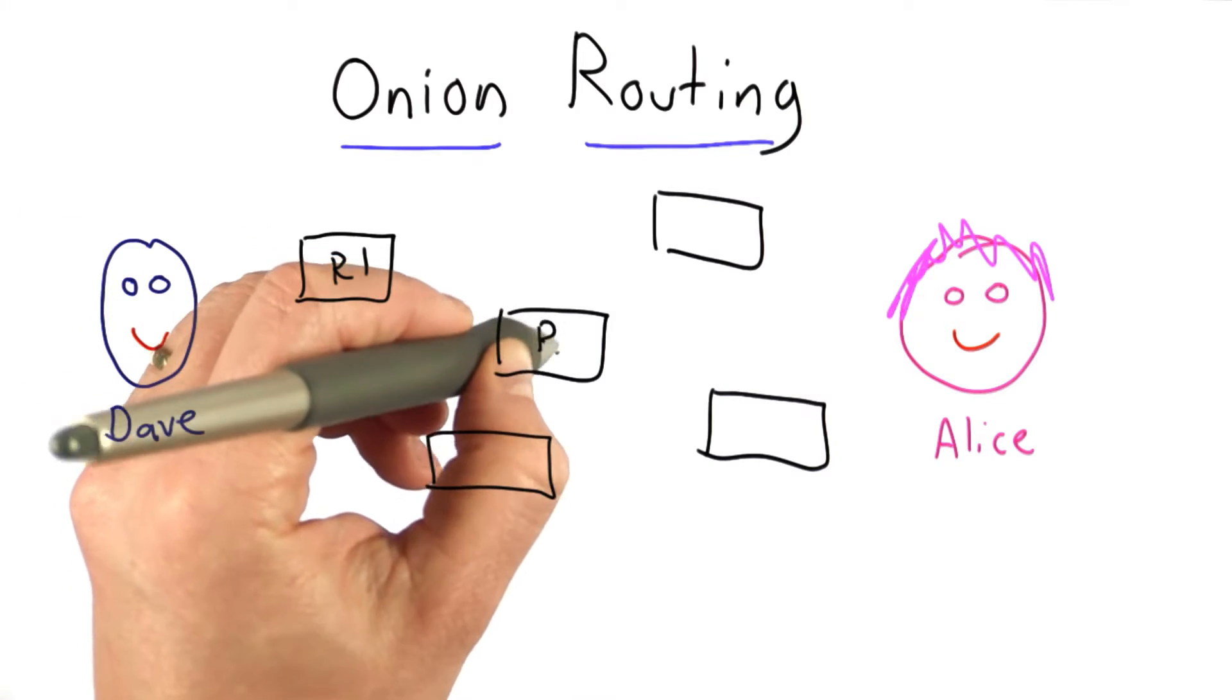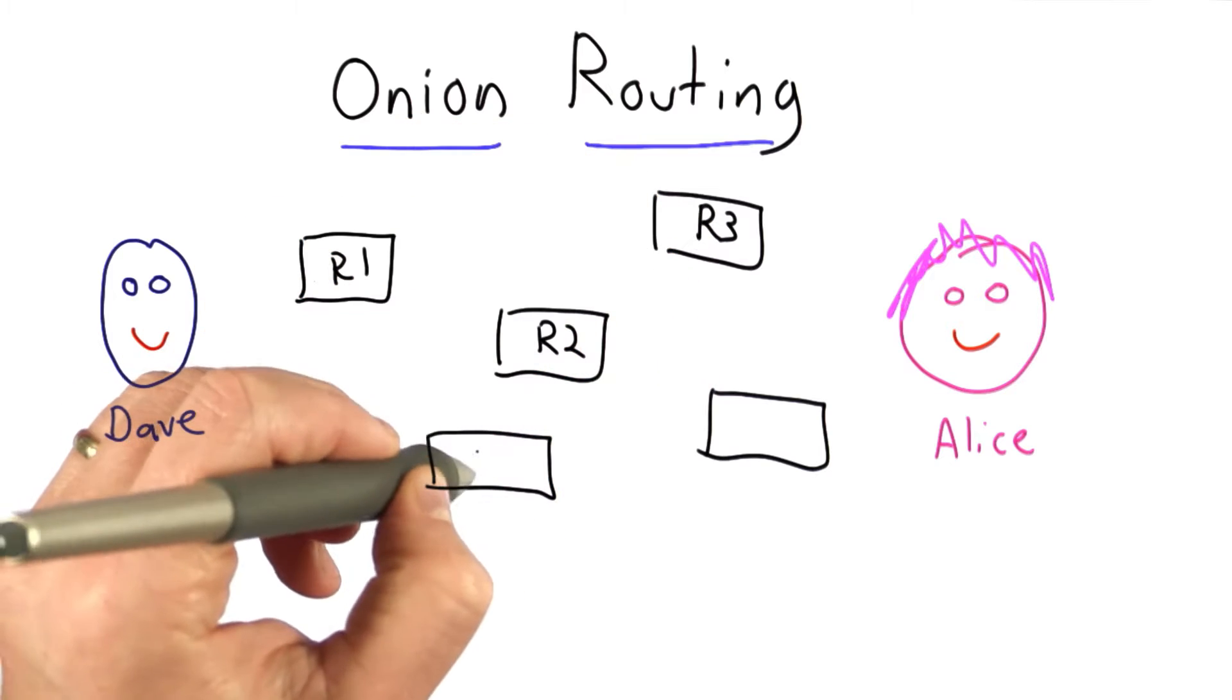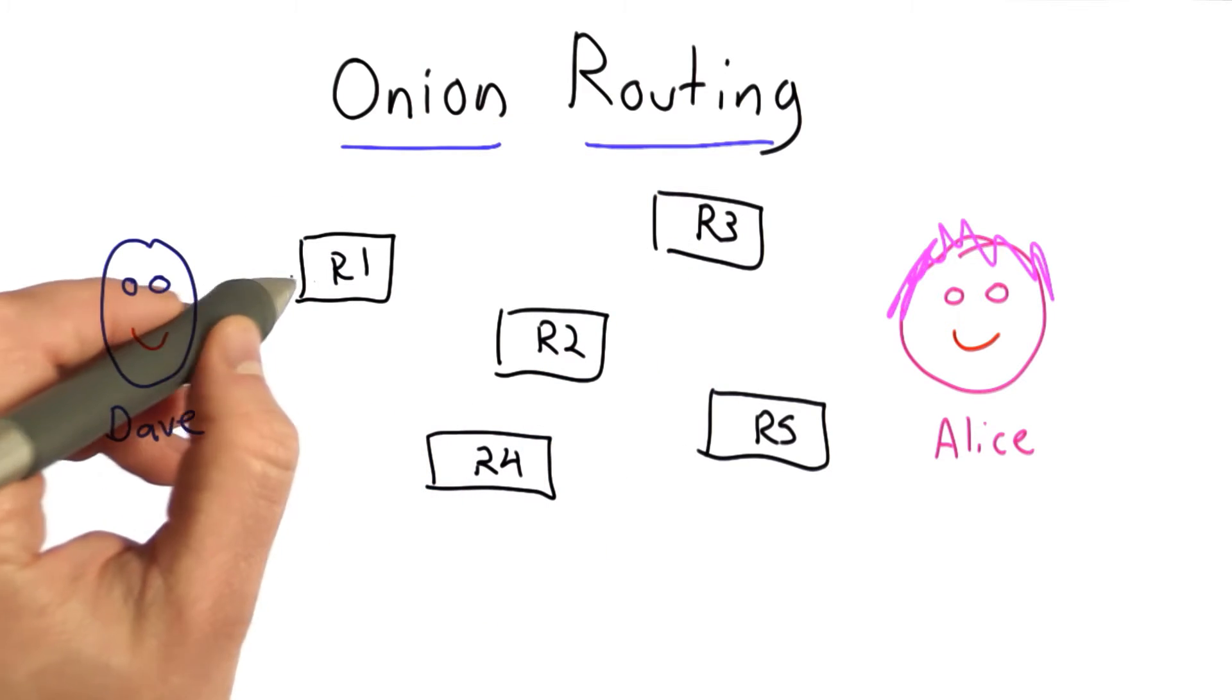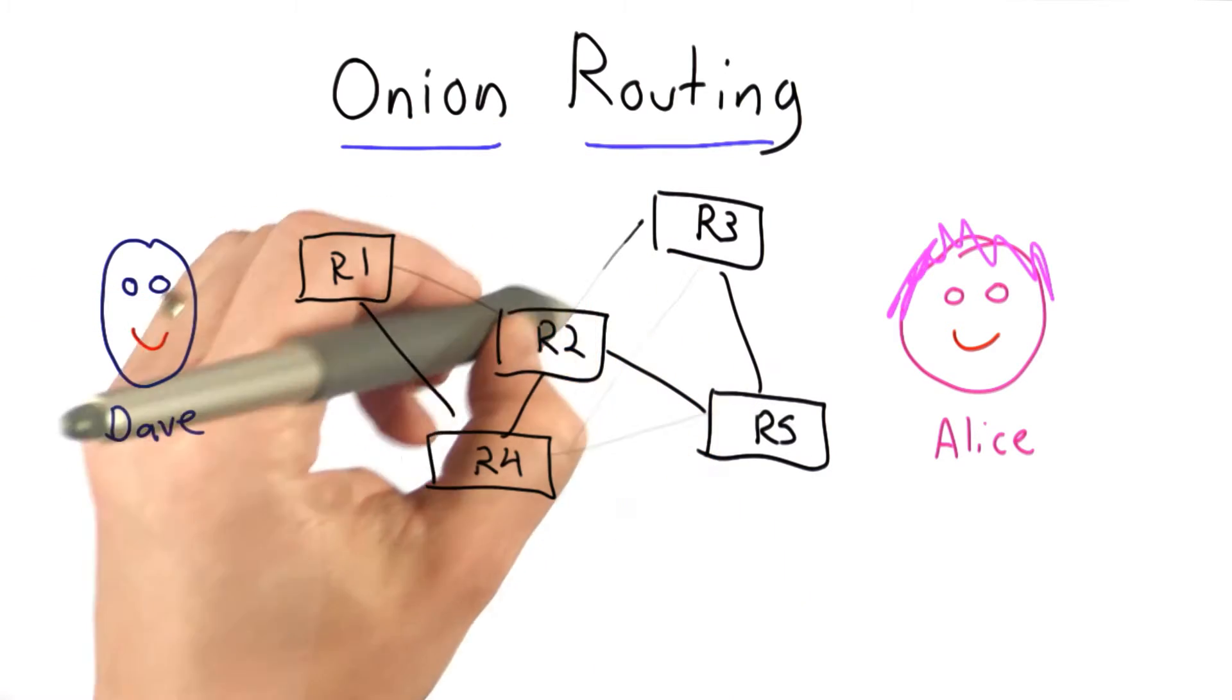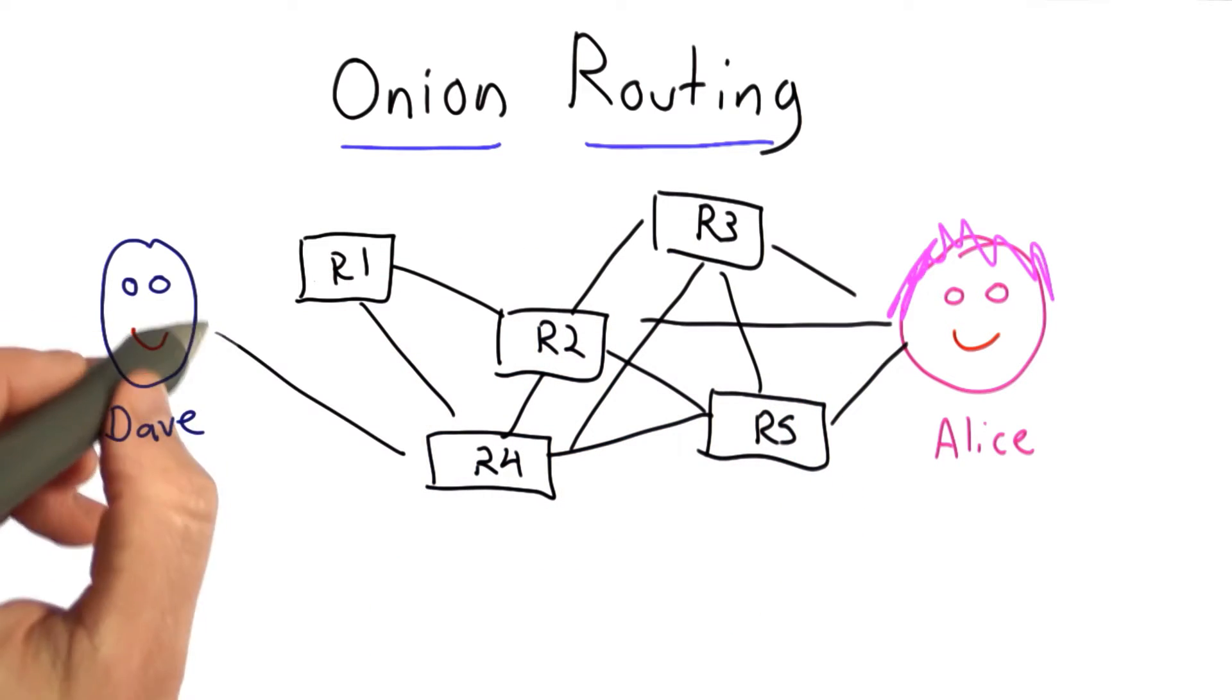We'll call them R1, R2, R3, R4, and R5, and the routers are all connected. They can all talk to each other, and they can all talk to Alice, and they can all talk to me.